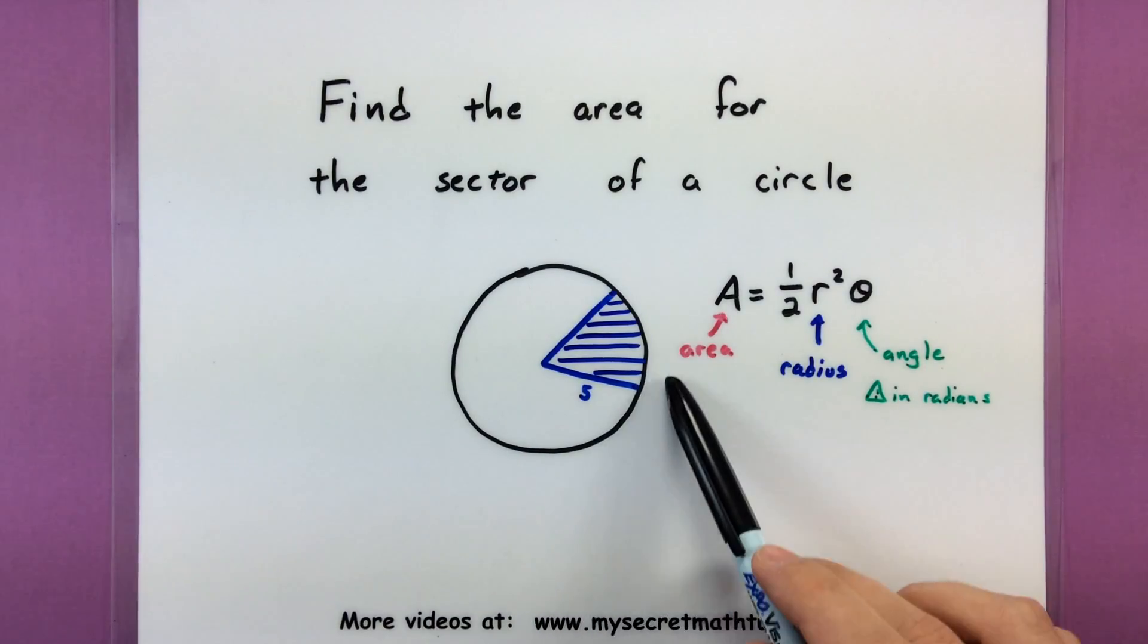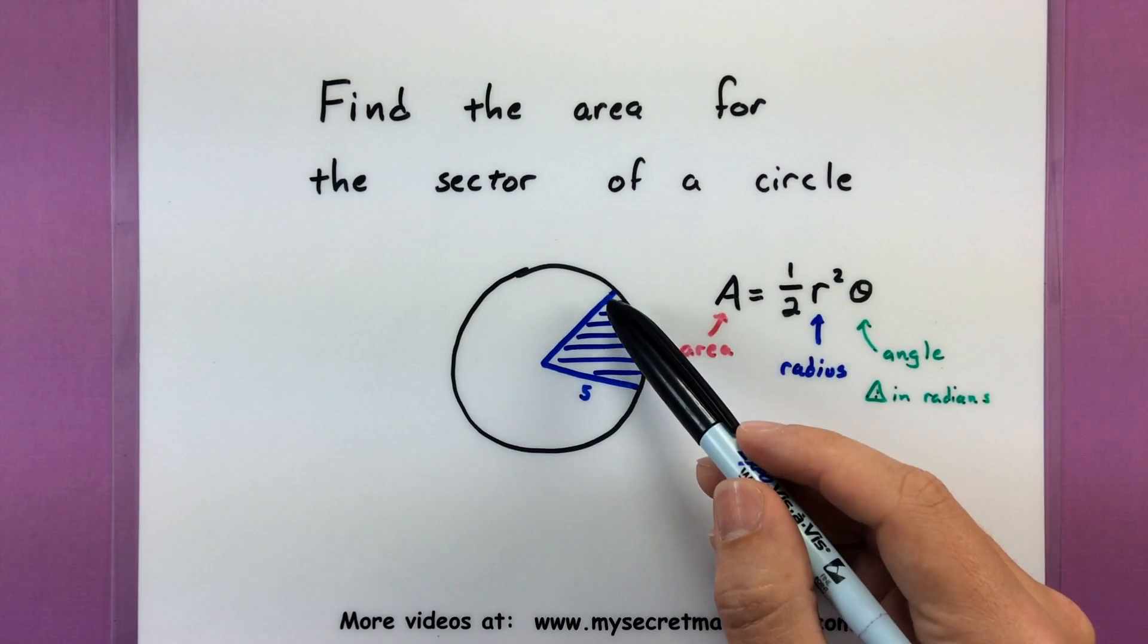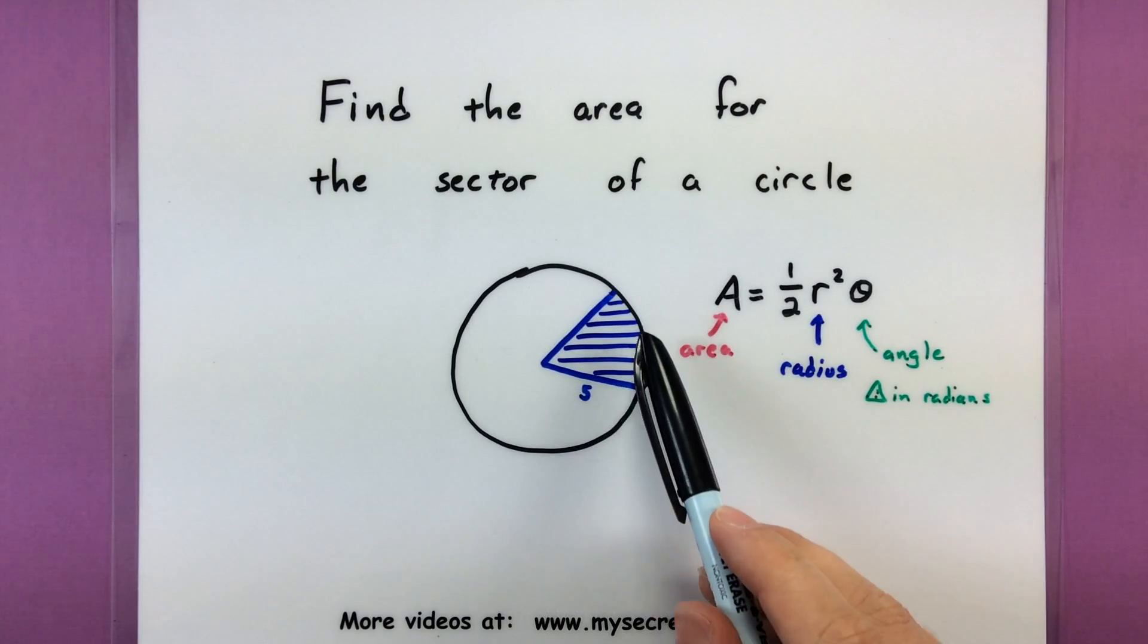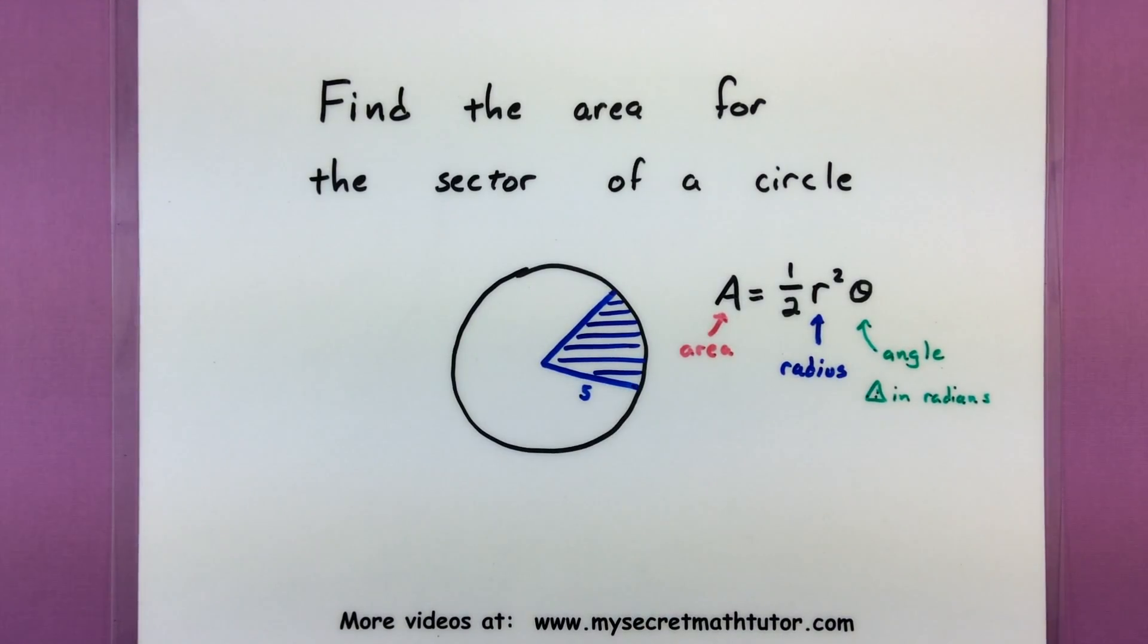So the idea behind that is here we have a circle, and if I mark out a certain angle I have just a portion of the circle, that's what we call a sector. And I'm curious, well what is the area of that sector? Now there's a really neat formula that you can use that relates the radius and the angle to the area of that portion.